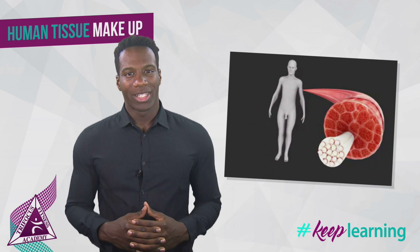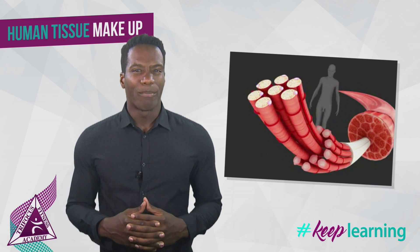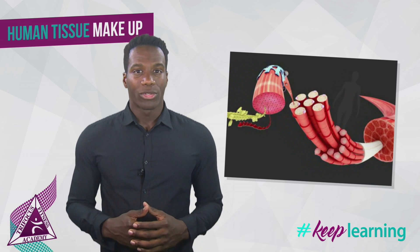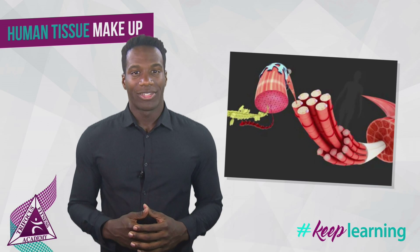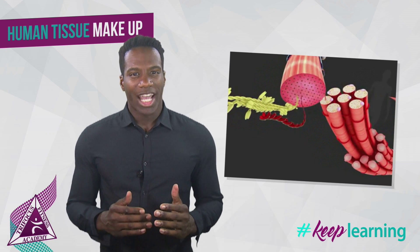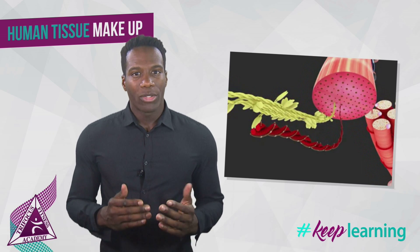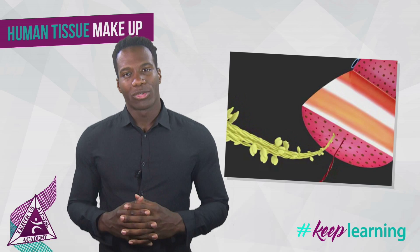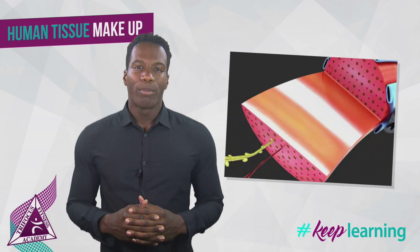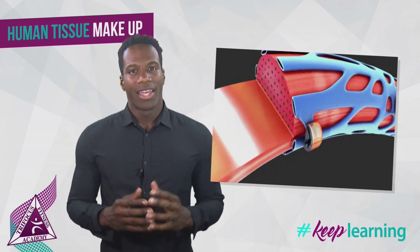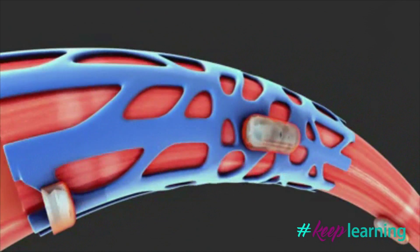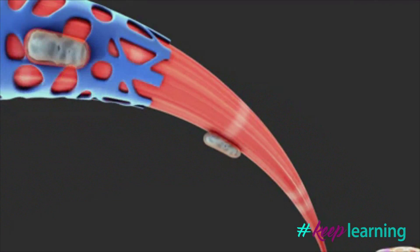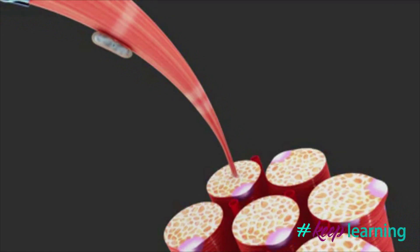Skeletal muscle is made up of thousands of muscle fibers that run the length of the muscle. Each muscle fiber consists of many contractile units called myofibrils, which run the length of each muscle fiber.